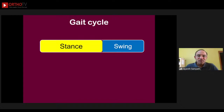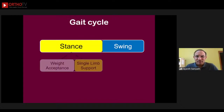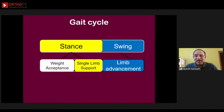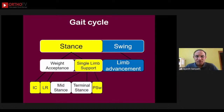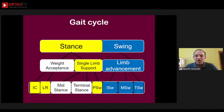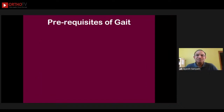To summarize: we have two main periods of the gait cycle, stance and swing. Stance has to do with weight acceptance and single limb support; swing has to do with limb advancement. Weight acceptance involves initial contact and loading response; single limb support involves mid-stance, terminal stance, and part of pre-swing; and limb advancement is accomplished through initial swing, mid-swing, and terminal swing.